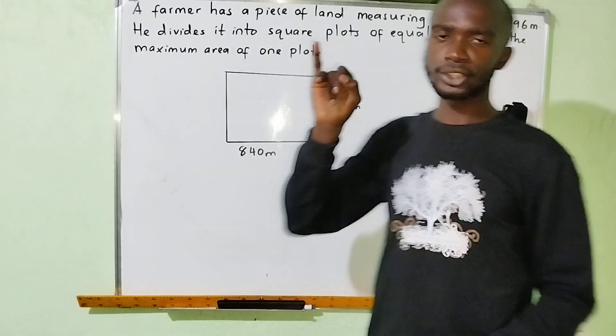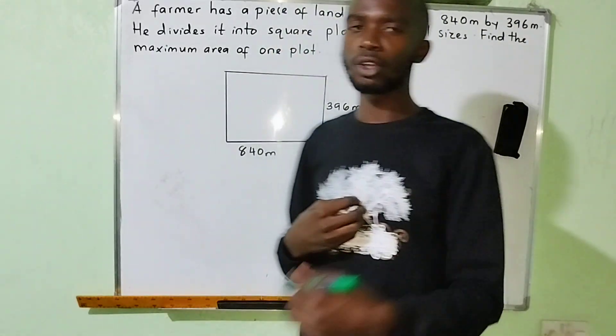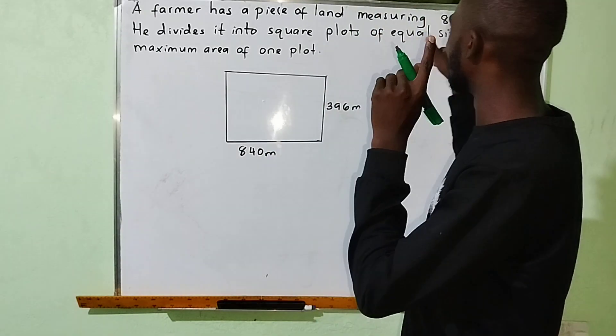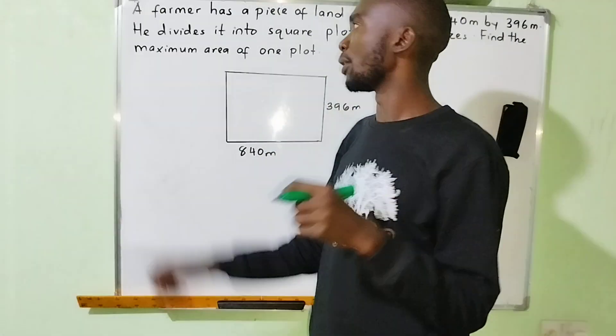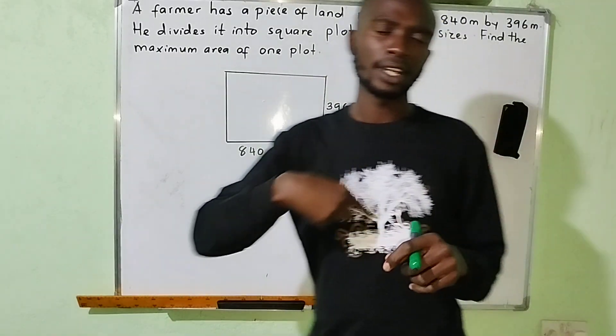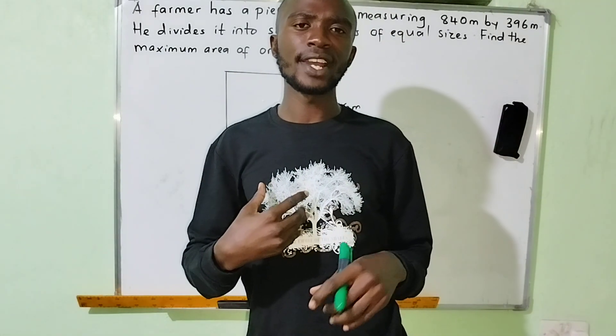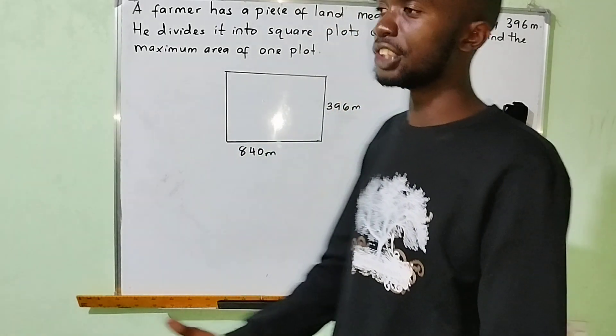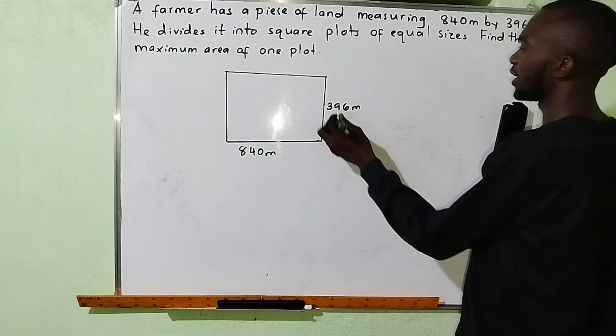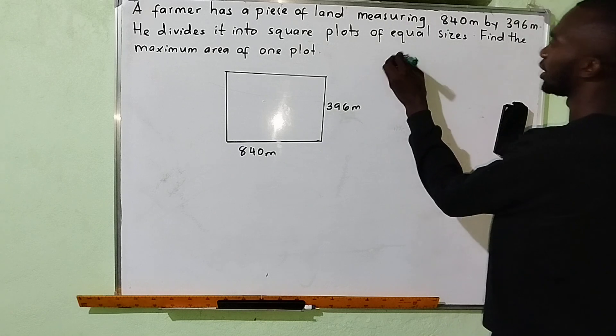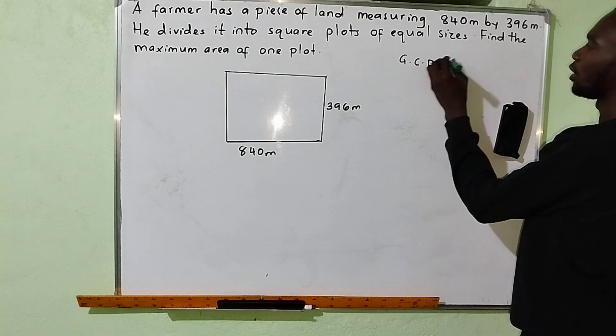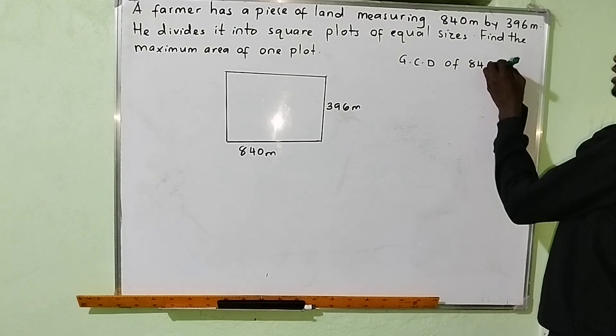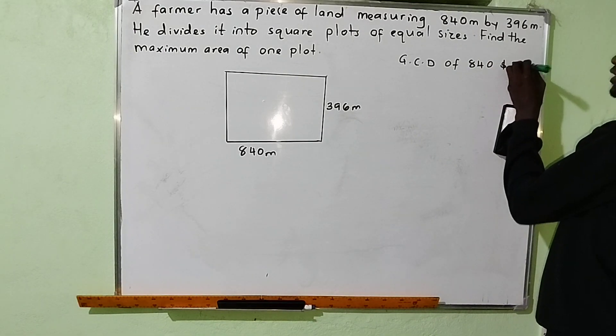If he divides it into square plots, you think of a number that divides these two numbers. Because you are finding the maximum, the maximum number which divides any two numbers or more is called the GCD. So you find the greatest common divisor, GCD, of 840 meters and 396 meters.